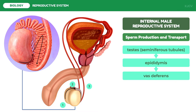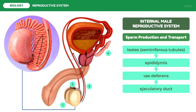The vas deferens will deliver the sperm cells to another organ for lubrication, or addition of fluids for the nutrition and motility of the sperm cells. This is the ejaculatory duct. After lubrication, the seminal fluid which contains the semen and sperm cells will be ejected through the urethra. This tube-like organ functions for transport and is also part of the excretory system, since it is the passageway of urine.